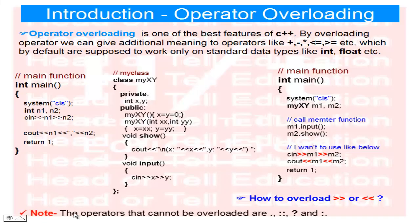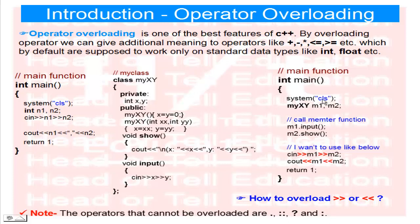Note: the operators that cannot be overloaded are dot (.), double colon (::), and the ternary operator. We cannot overload dot because it is used to call member functions like m1.input() or m2.show(). Double colon is used to give the reference of the class name and indicate that a function belongs to a class.